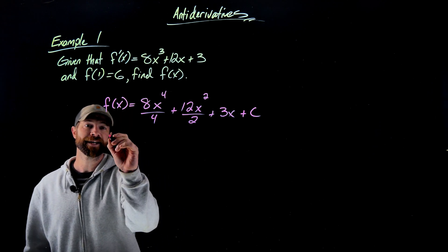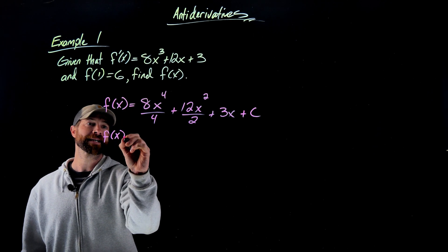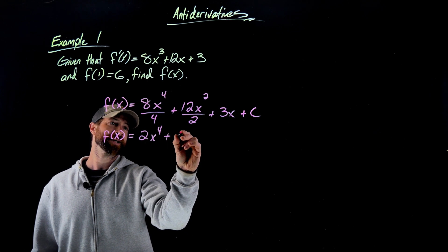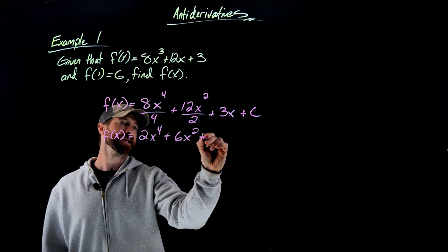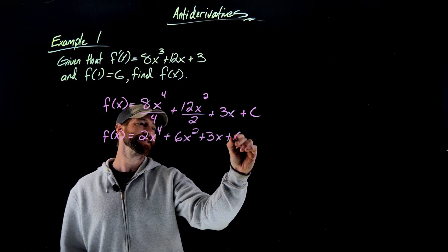We'll clean this up real fast. So we got f of x equals 2x to the fourth plus 6x squared plus 3x plus c.